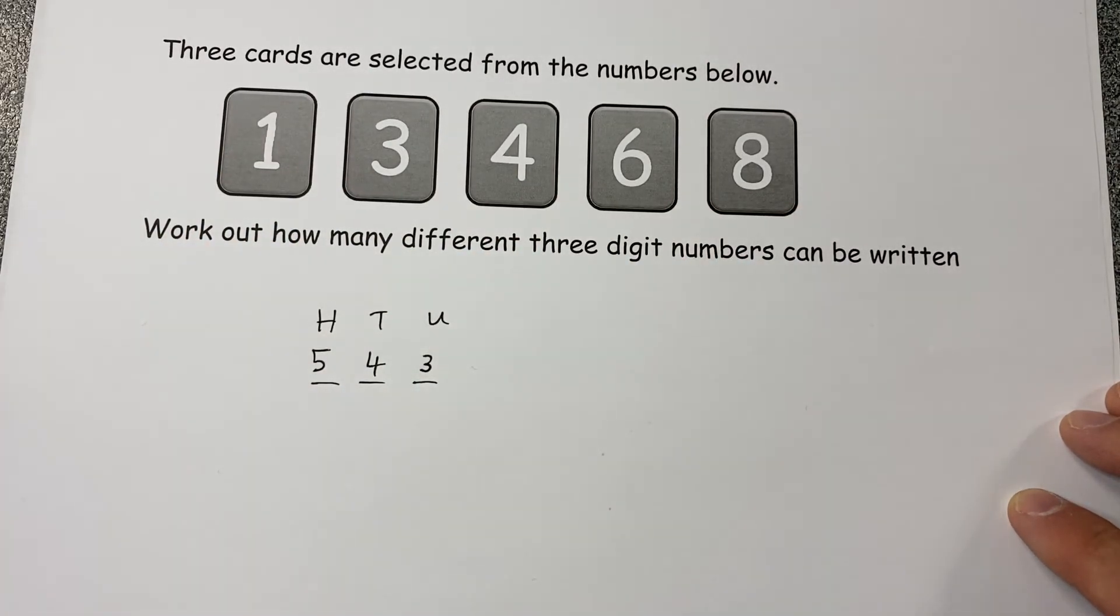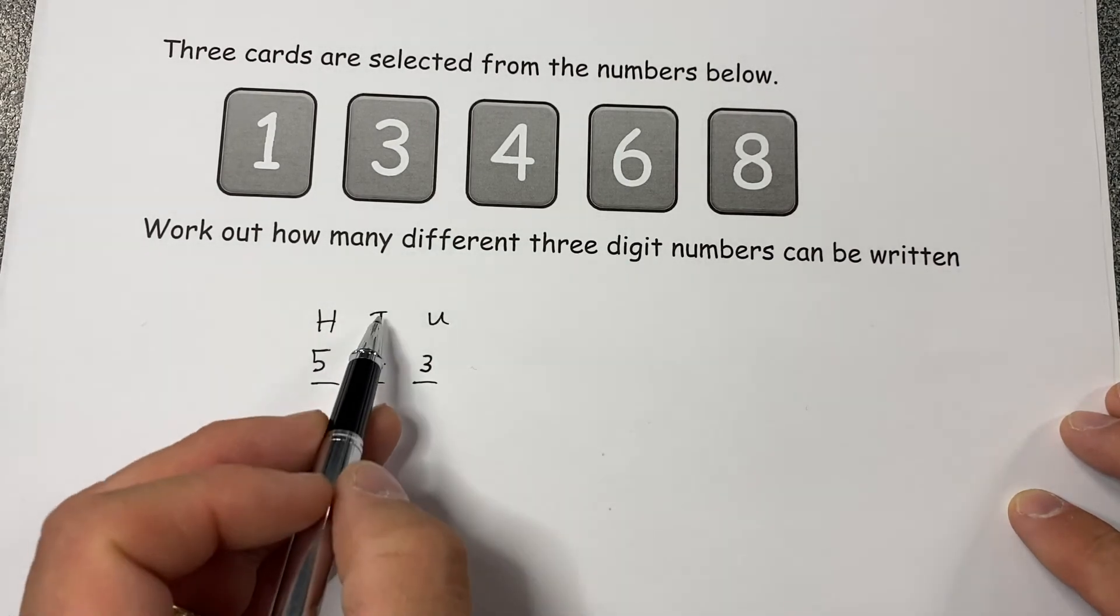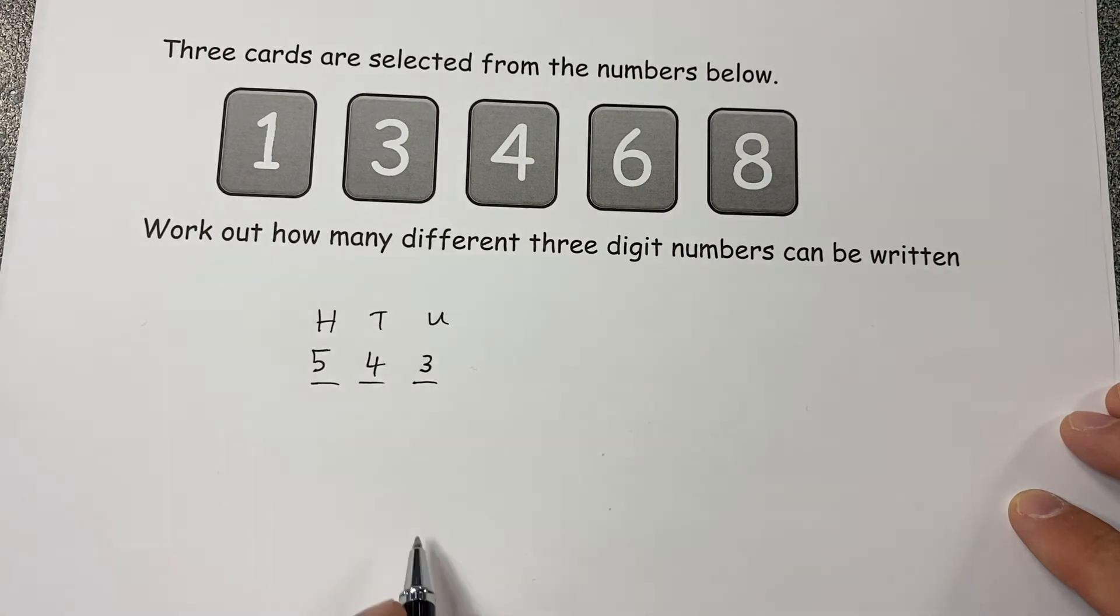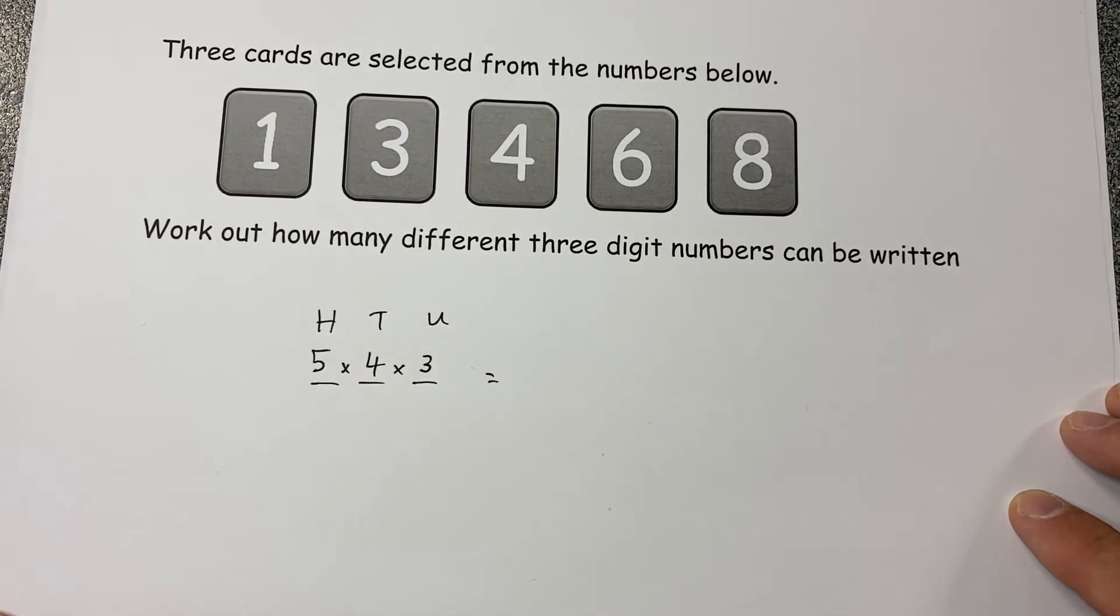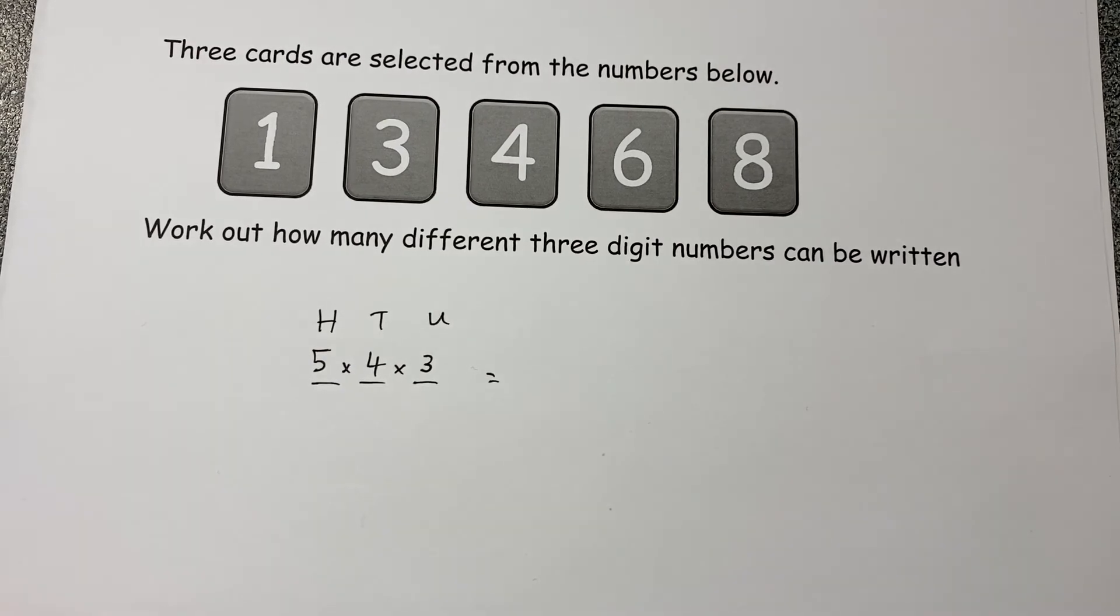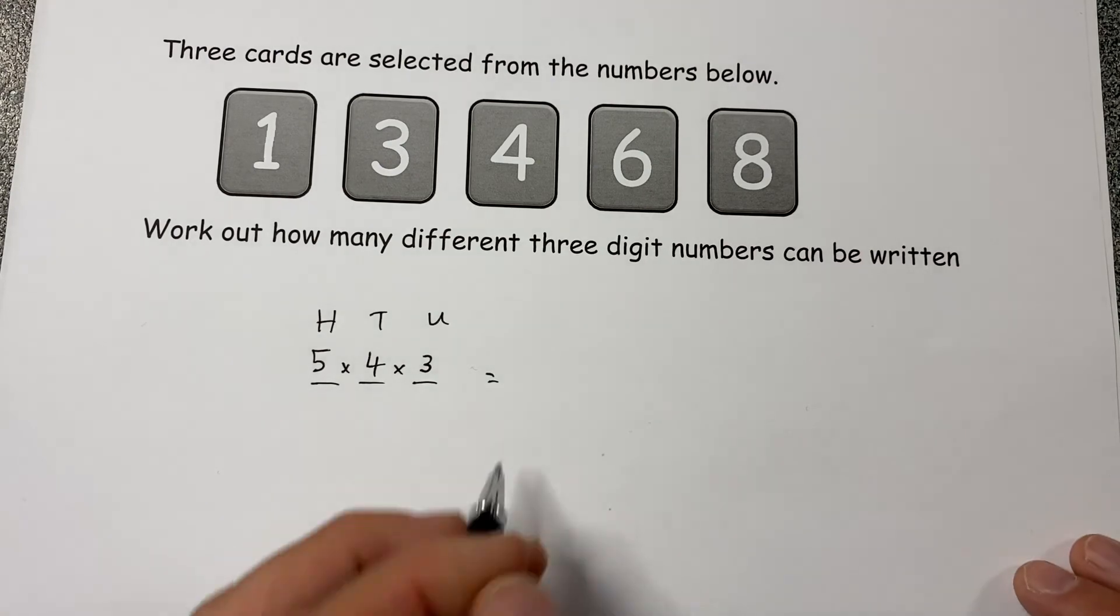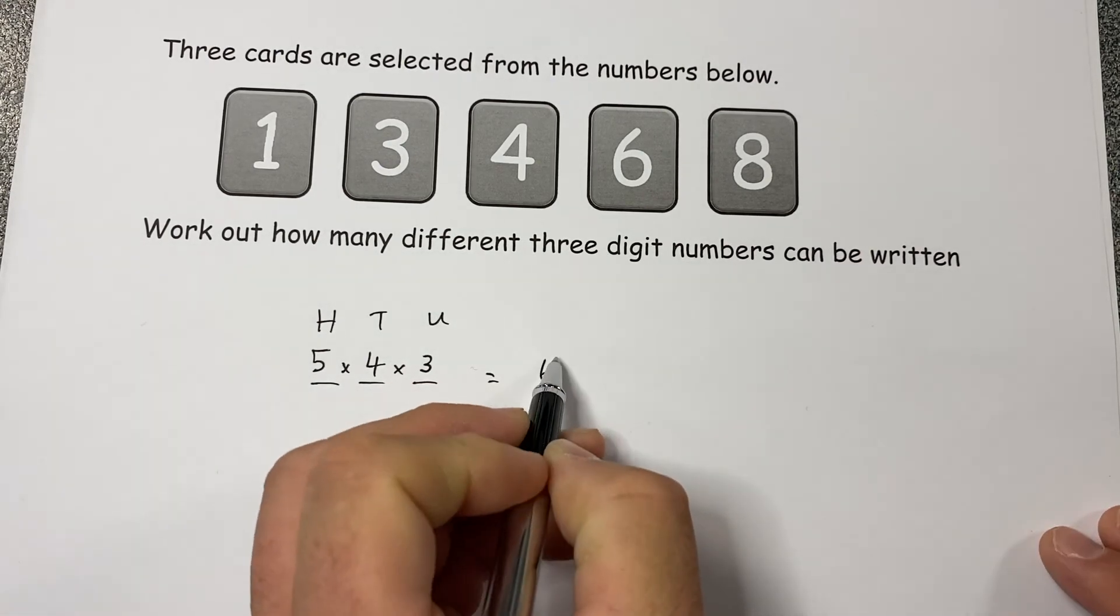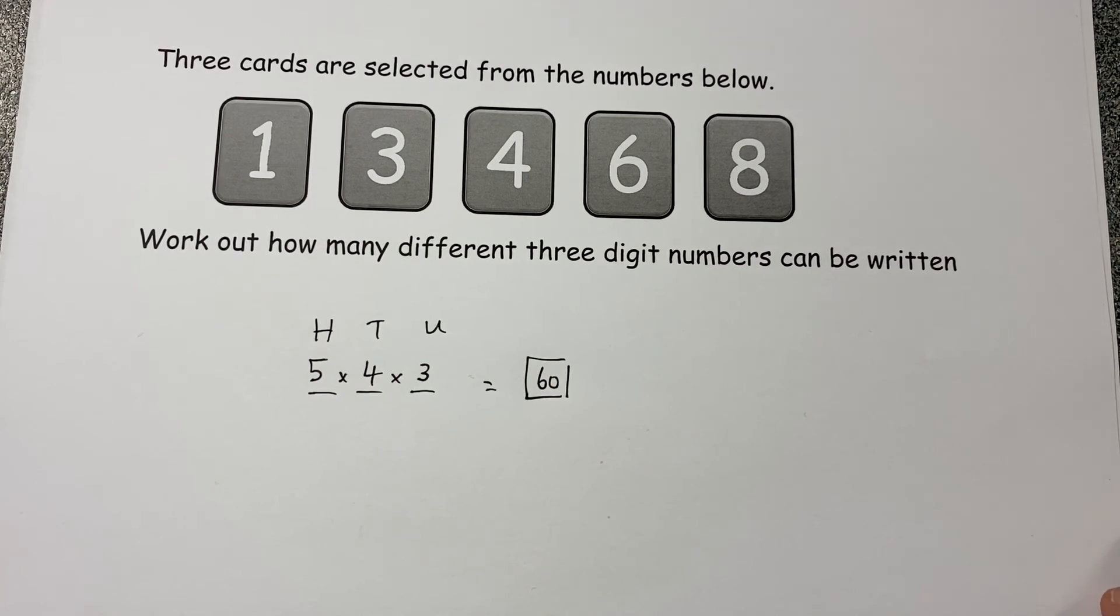So that is what is possible for all different combinations for the hundreds that can be selected, the tens that can be selected, and the units that can be selected. So the total number of three digit numbers that can be made is five times the four times the three, which calculator or otherwise is 60. So if you were writing them down, there would be 60 different numbers you would write down.